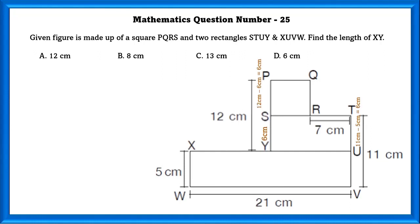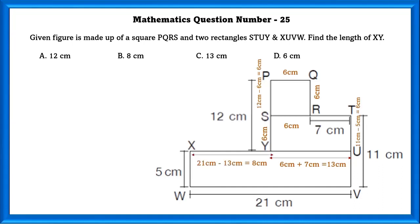Since all sides of the square are equal, each side is 6. Using this we can find U and Y, that is 13 centimeters. In order to find the value of XY we have to subtract 13 from VW, that is 21 minus 13, which is equal to 8 centimeters.